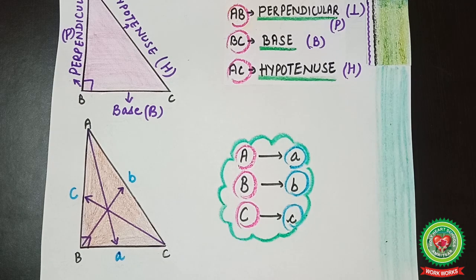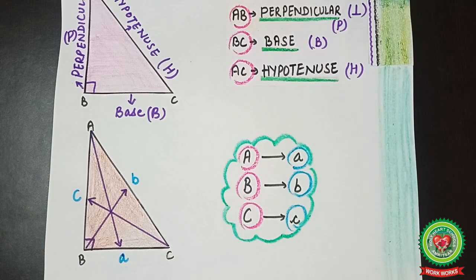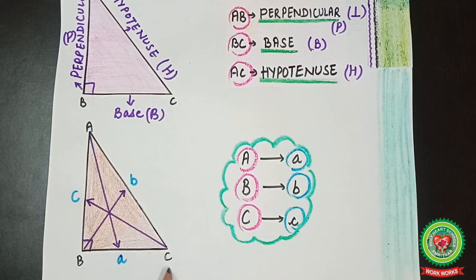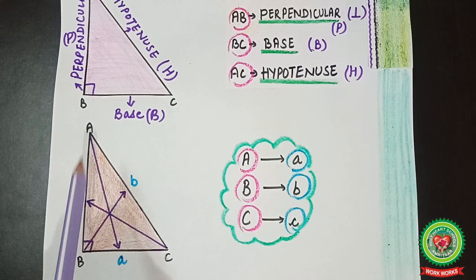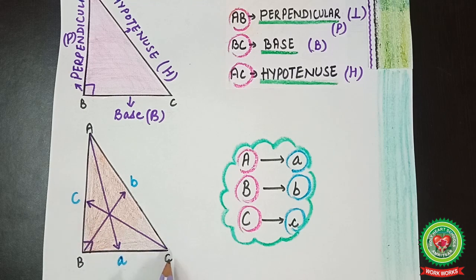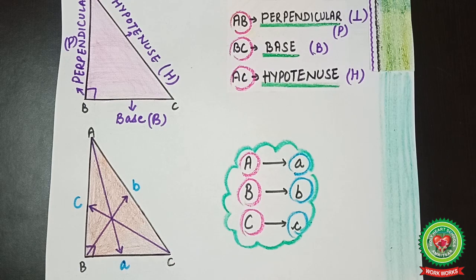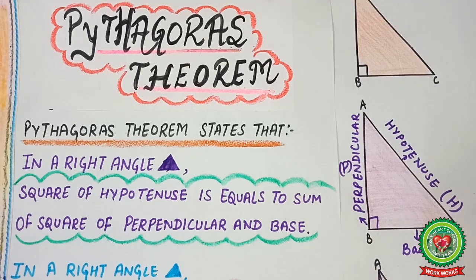There is one more method to express the sides of a right-angle triangle. Here A, B, C are the three vertices of the triangle. BC can be represented by small letter 'a', which is opposite to vertex A. Similarly, AC can be expressed as small letter 'b', opposite to vertex B, and AB as small 'c', opposite to vertex C. Some questions in your book use small a, b, and c, but we will proceed with capital P, capital B, and capital H.